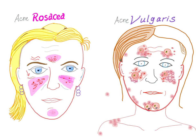Another difference is that acne rosacea occurs episodically because it's trigger-related. There are certain triggers that lead to acne rosacea, so it comes only following these triggers. However, acne vulgaris can come anytime.